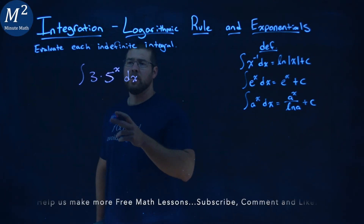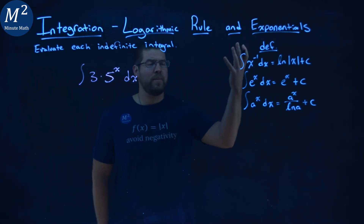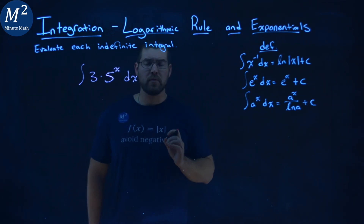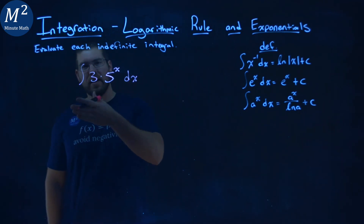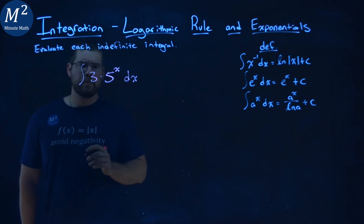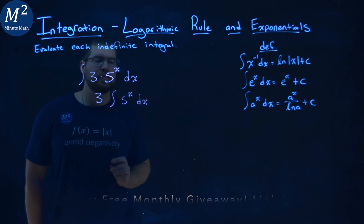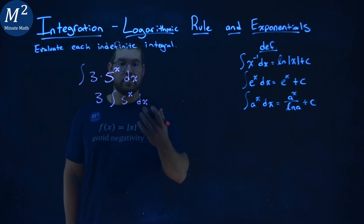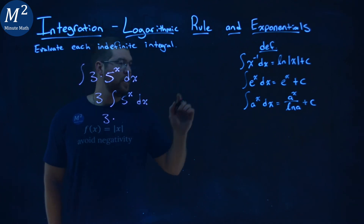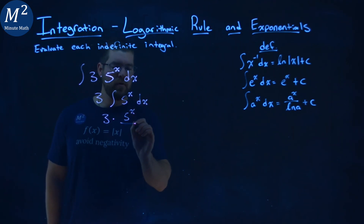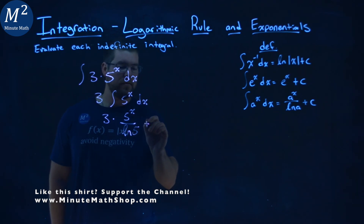We're given this problem right here: the integral of 3 times 5 to the x power dx, and we want to evaluate this indefinite integral. I want to see if I can make it look like one of my definitions — the last definition looks pretty close. I have a 3 out front that doesn't line up with the definition, but I'm allowed to pull that constant 3 outside of the integral because we have multiplication going on here. So I pull that 3 out: 3 times the integral of 5 to the x power dx. Our a value is going to be the 5.